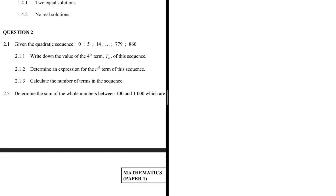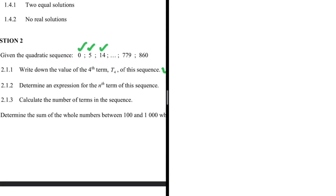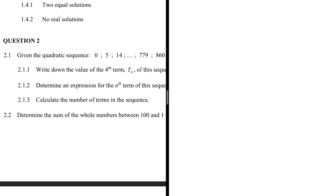Write down the value of the fourth term t4 of this sequence — that is question 2.1.1. We are given a quadratic sequence where t1 = 0, t2 = 5, t3 = 14, and t4 is unknown. That is what we are looking for — quite a basic quadratic sequence question you would expect in the exam.